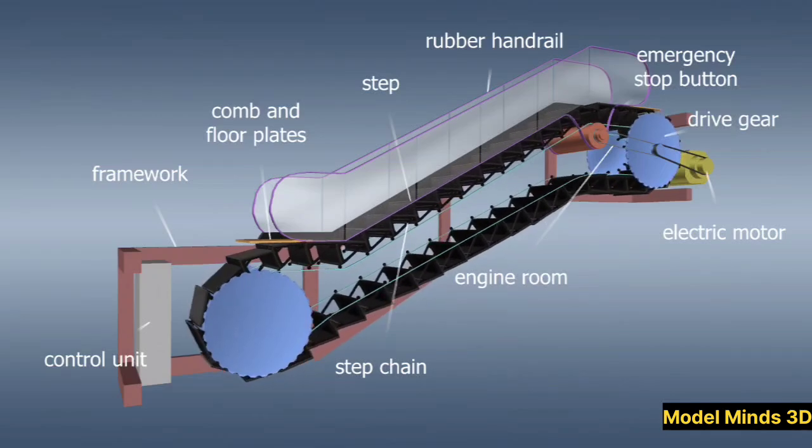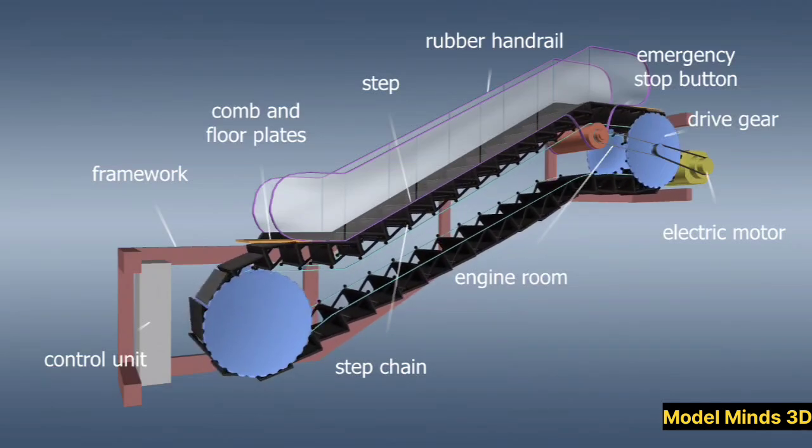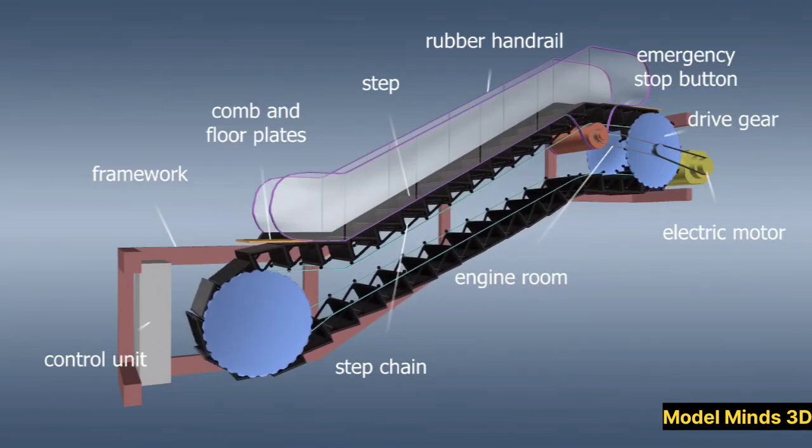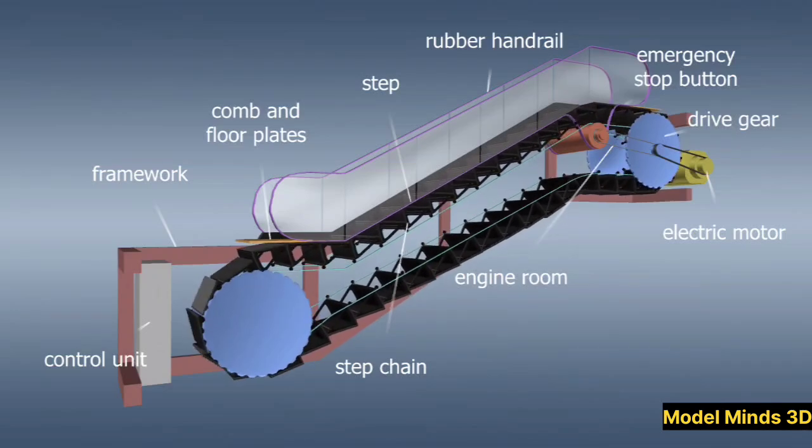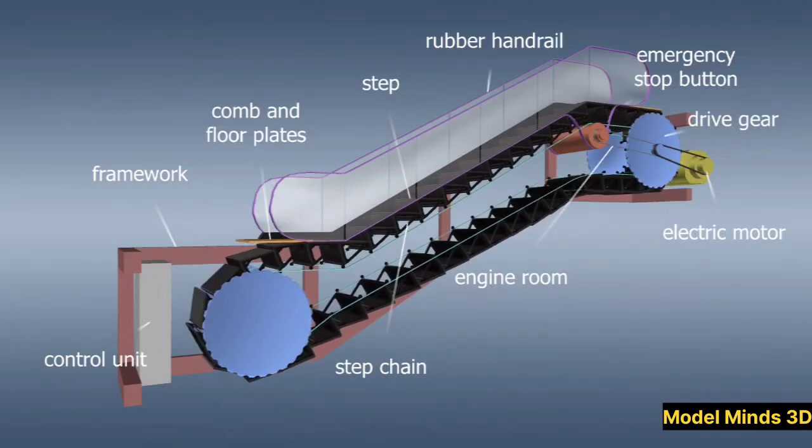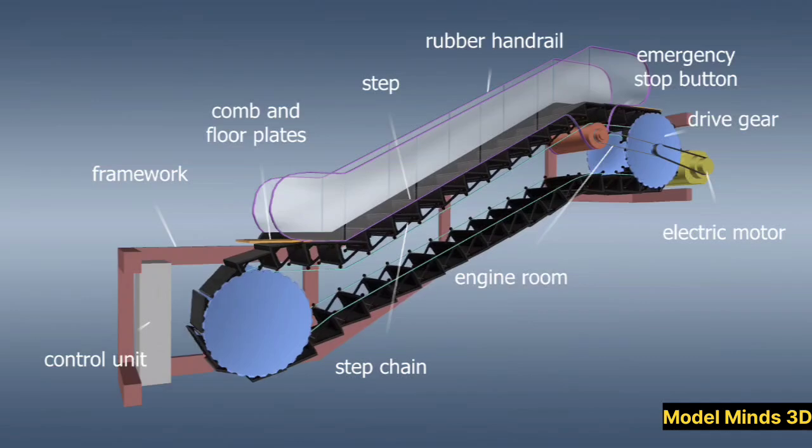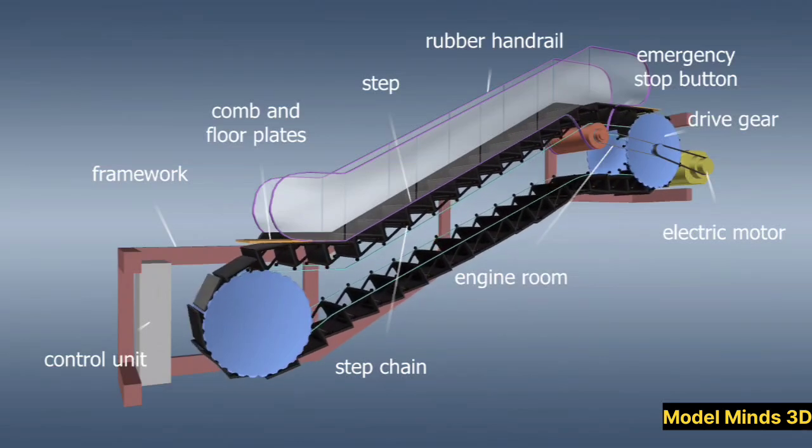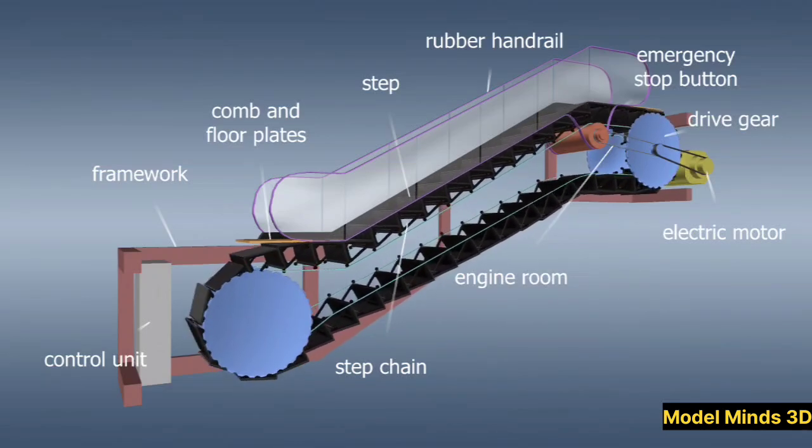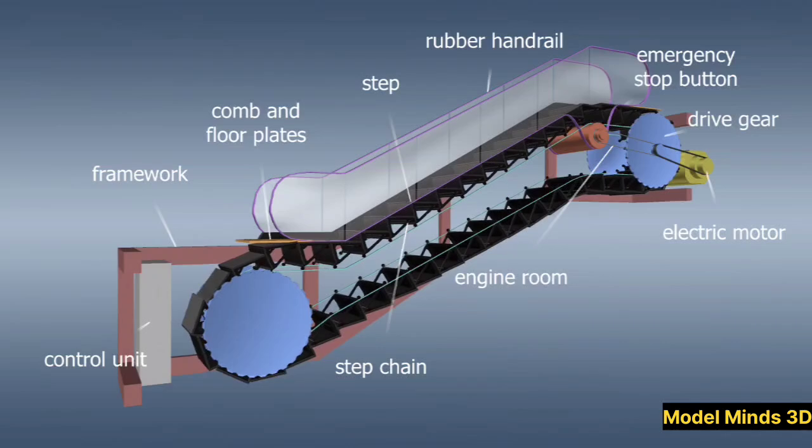How an escalator works. Now that we know the main components, let's understand how an escalator works. The motor system. A powerful electric motor drives the main chain system that moves the steps in a continuous cycle. This motor is usually located at the top or bottom of the escalator.